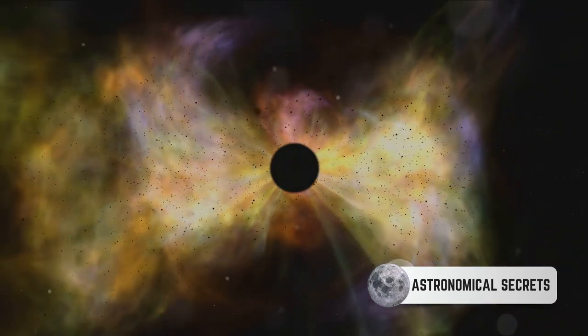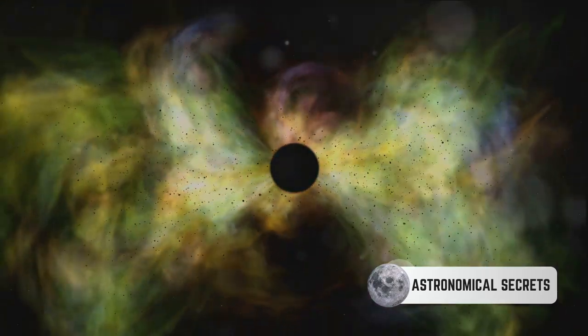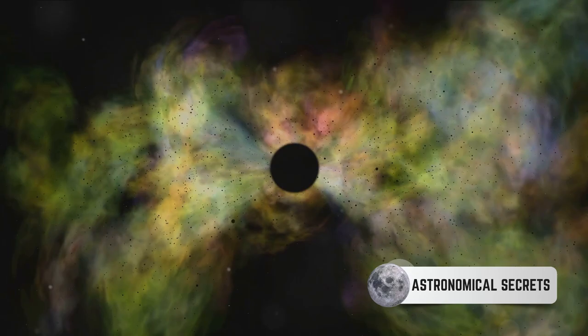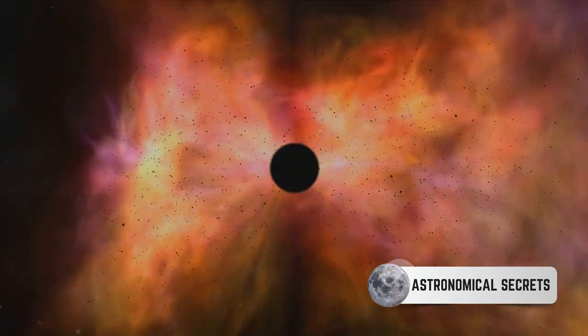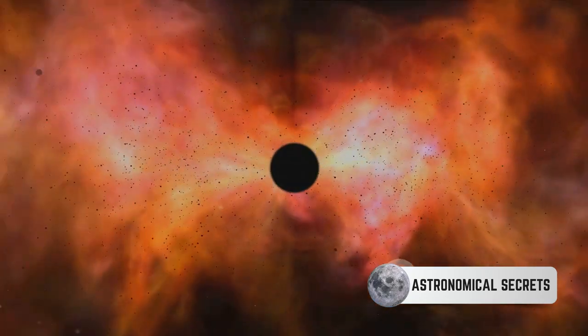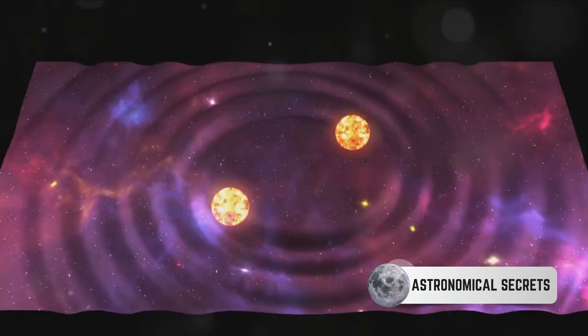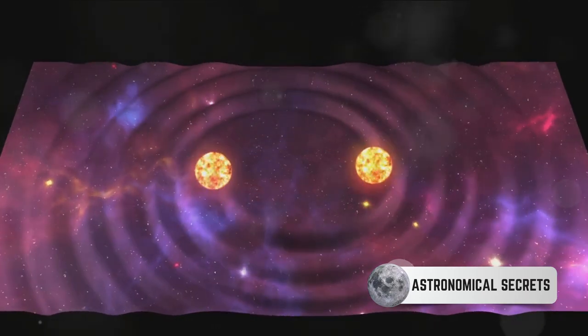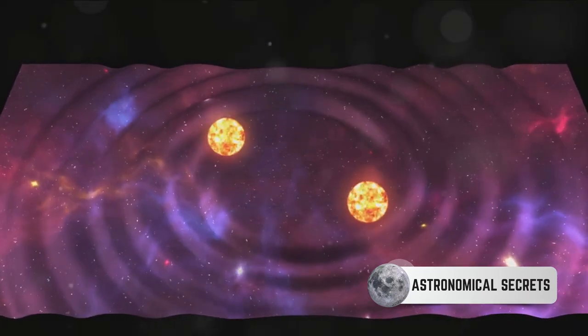This phase, however, is transient. The outer layers of the red giant are not gravitationally bound as tightly as they were during the main sequence phase. Over time, stellar winds and radiation pressure push these layers away from the core. This process, known as mass loss, results in the star shedding its outer layers into space.